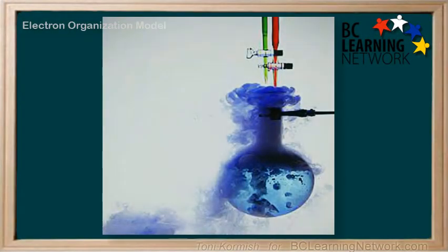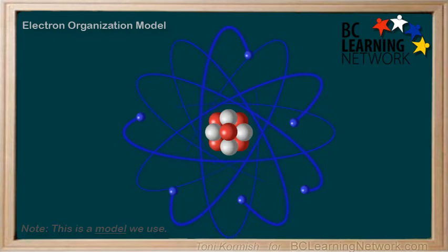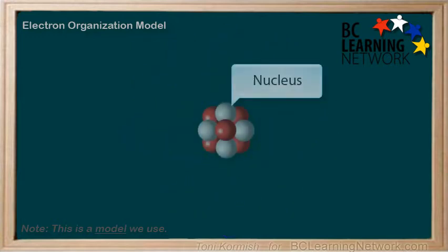The electron distribution of an atom indicates how reactive an atom is. Electrons are distributed into orbits around the nucleus in a specific pattern. For the purpose of this course, you only have to understand a very elementary level of electron organization, and it goes like this.